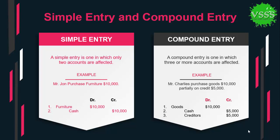On the other hand, a compound entry is one in which three or more accounts are affected. For example, Mr. Charles purchases goods for $10,000, partially on credit — paying $5,000 in cash and getting $5,000 on credit. Three accounts are affected: goods, cash, and creditors. Goods is debited by $10,000, and cash and creditors are each credited by $5,000.